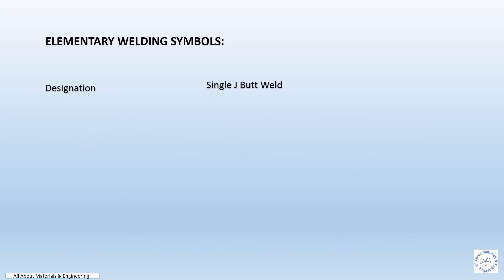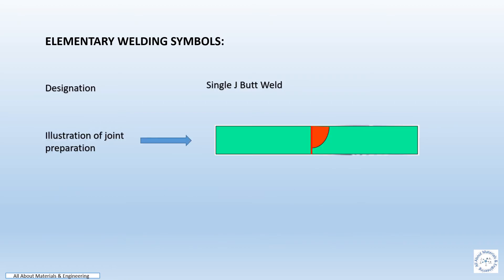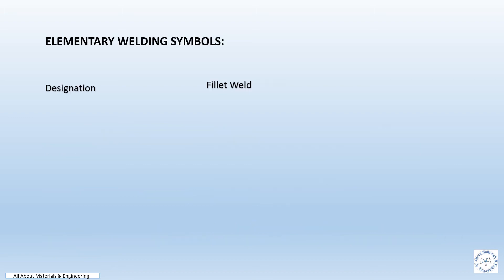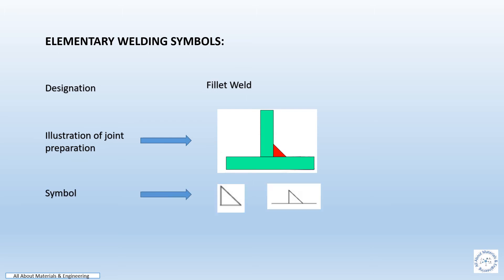Elementary symbol for single J butt weld. The sketch shows the illustration of joint preparation and the symbols to be incorporated in the drawing. One plate has a square end while the other has a corner with a one-quarter moon shape pathway through the plate thickness, forming a mild J when they are joined, as you see in the symbol.